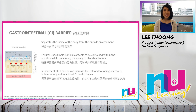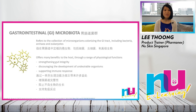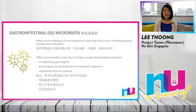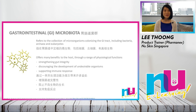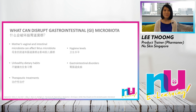Any impairment of the GI barrier can increase the risk of developing infectious, inflammatory, and functional GI health issues. GI microbiota refers to the collection of microorganisms colonizing the GI tract, including bacteria, archaea, and eukaryotes. There are 400 million different bacterial species in our bodies, most of them in our GI tract. This microbiota offers many benefits, including strengthening gut integrity, protecting against pathogens, and supporting immune response. Seventy percent of the human immune system is localized in the digestive tract.